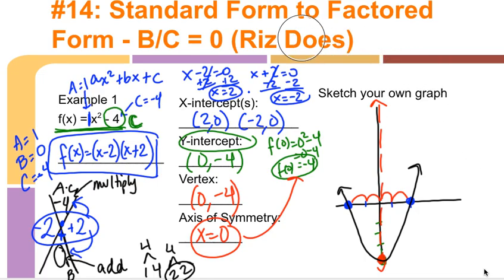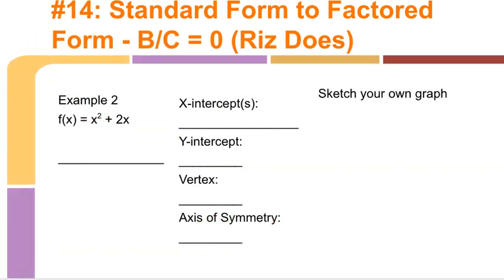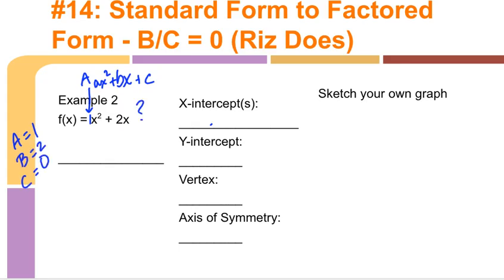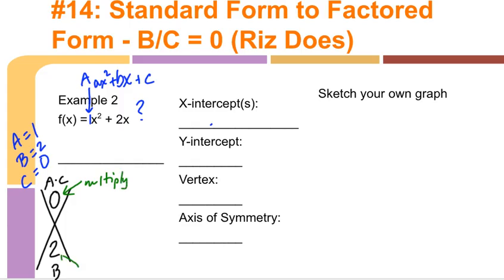Example two: f(x) = x² + 2x, where C will be 0. A is 1, B is positive 2 (the term with x), and there's no constant term so C equals 0. Setting up the diamond: A times C is 1 times 0, which is 0 at the top. B is 2 at the bottom. We want two numbers that multiply to 0 and add to 2.